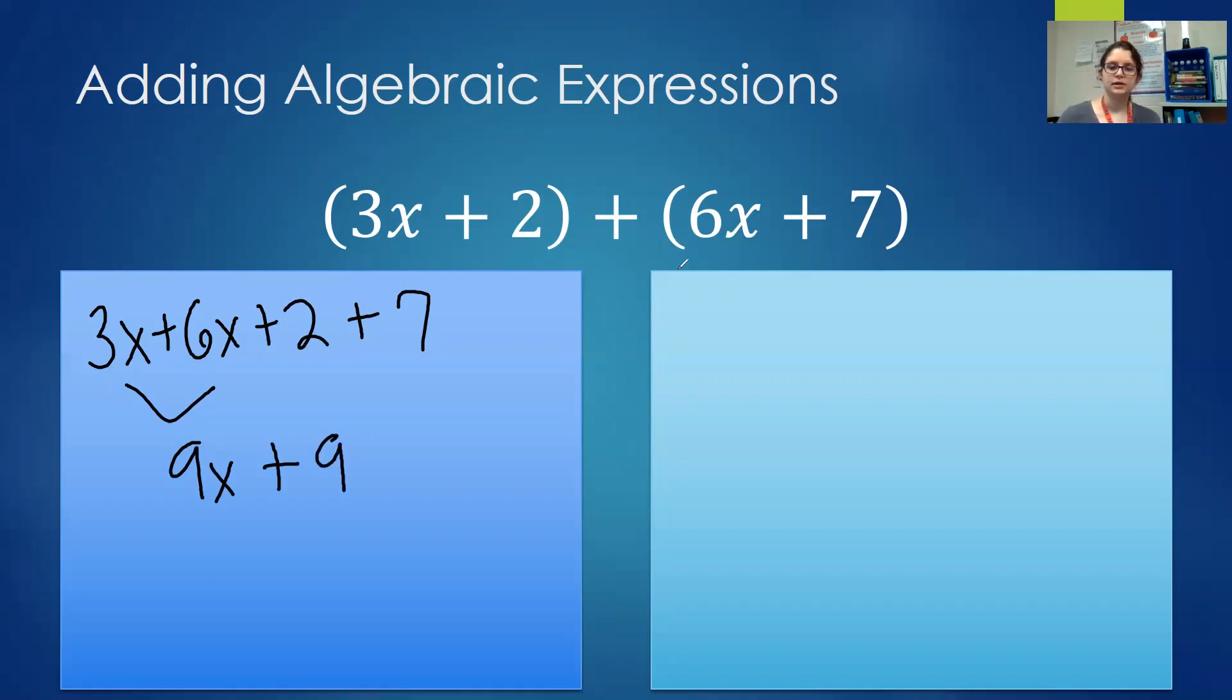Now in adding algebraic expressions, the method we're looking at today, we are going to be stacking our problems. Instead of lining them up together we are going to write them stacked. So the 6x would be written stacked under the 3x and the 7 would be written under the 2. We'd put a plus sign in front because this is a positive 6x. 3x plus 6x is 9x and 2 plus 7 is 9. We will be using this stacking method on our next set of examples and we're learning this because it makes solving subtraction problems easier.